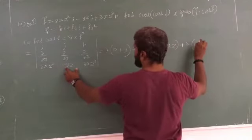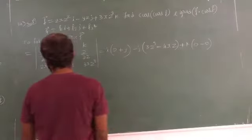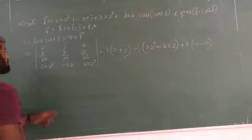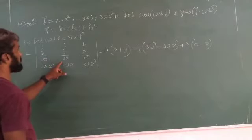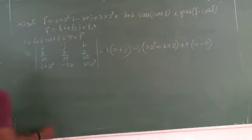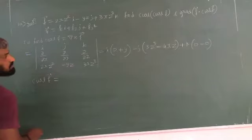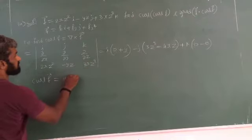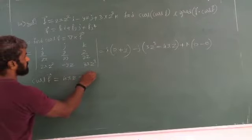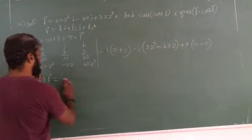With respect to x there is no x, it is 0 minus y which is 0. With respect to x it is 0, so curl of F is equal to y i plus 4xz minus 3z³ j plus 0 k.